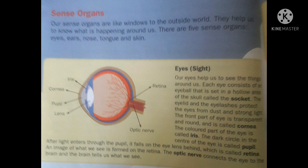This hollow area of the skull is called the socket. The eyelid and the eyelashes protect the eyes from dust and strong light. The front part of the eye is transparent and round, and this transparent part is called the cornea.